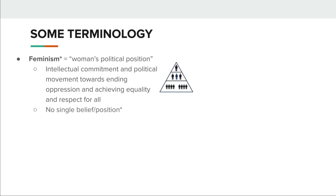More thoroughly, feminism is both the intellectual commitment and political movement towards ending oppression and achieving equality and respect for all. Because this is a broad definition, there are going to be lots of different types of feminism — simply saying that one is a feminist doesn't tell us exactly what one believes. Like any terminology, it has become an umbrella term with a lot of variety within it.